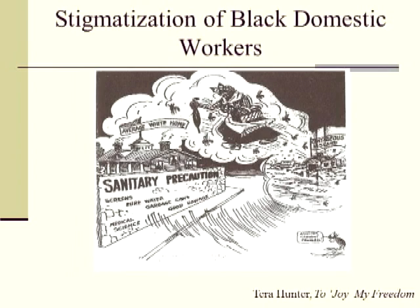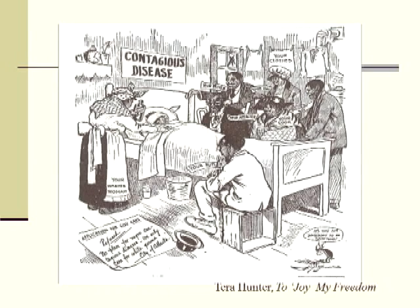This is from Tara Hunter's To 'Joy My Freedom — a cartoon from the Atlanta Journal-Constitution showing 'contagious disease filters where Black people live,' then the maid takes it to the average white home. Another cartoon shows your butler, your washerwoman, and how when Black people came to your home they were carrying disease. Sometimes Black people used such images to try to get white Americans to address health disparities — if not for charitable reasons, then for self-interest.